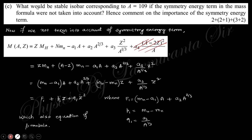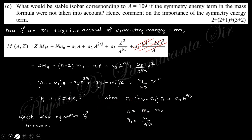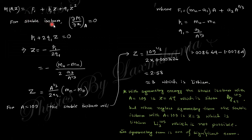The next part asks: what would be the stable isobar for A = 109 if the symmetry energy term of the mass formula were not taken into account? The symmetry term is (A − 2Z)²/A · a₄. If we neglect this term, we retain only the remaining terms, which again give a parabolic curve but with different constants. Setting the derivative to zero for stable configuration and substituting A = 109, we obtain Z = 3.